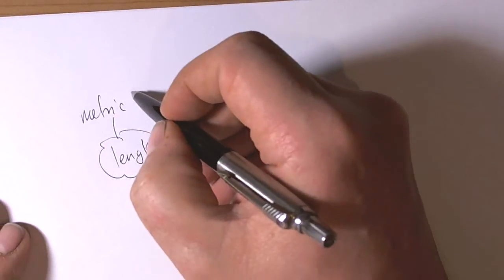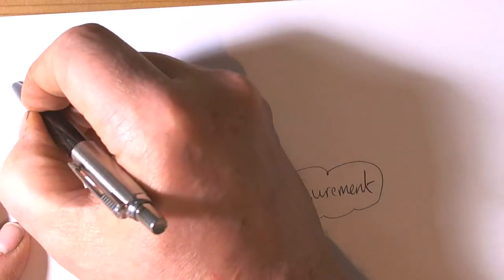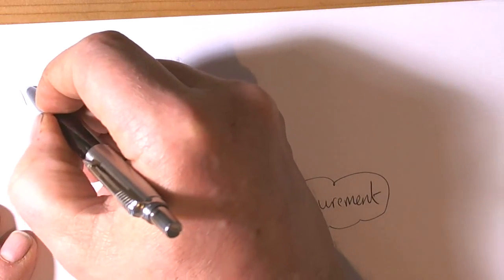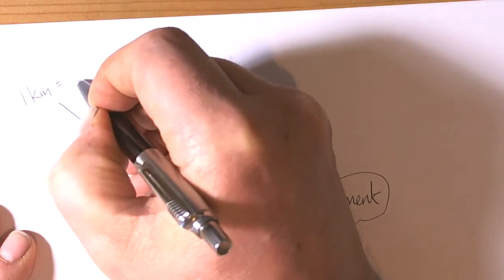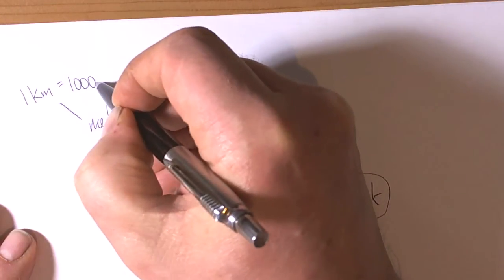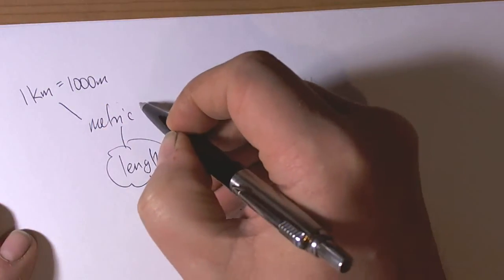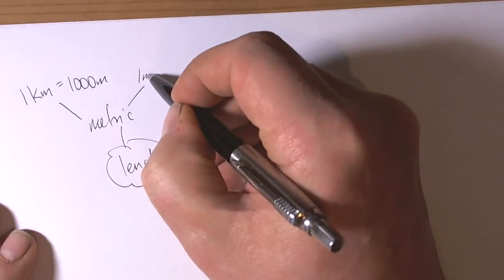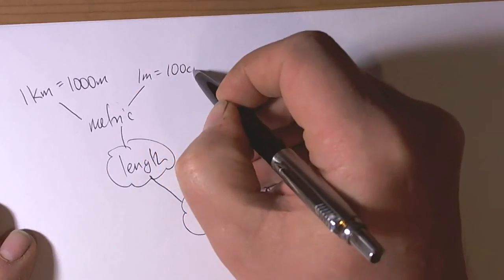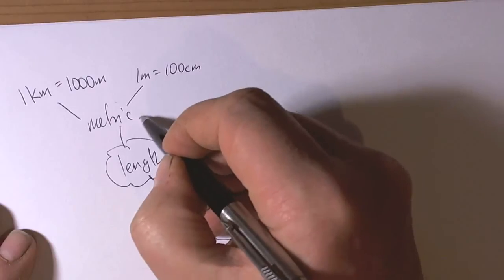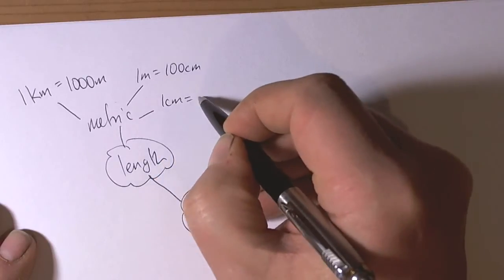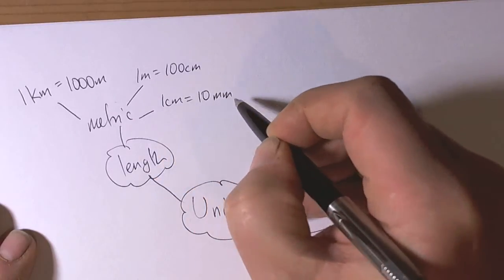We need to remember kilo means a thousand, so one kilometre is equal to a thousand metres. Then we need to recognise that one metre equals a hundred centimetres and then one centimetre equals ten millimetres.